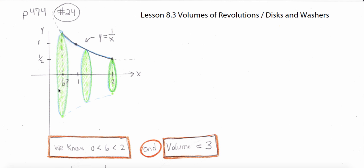All right, so in other words, we've drawn a picture. Here's the curve, y equals 1 over x. We're going to revolve around the x-axis, and I want to find the value of b so that the volume of the solid generated is equal to 3.